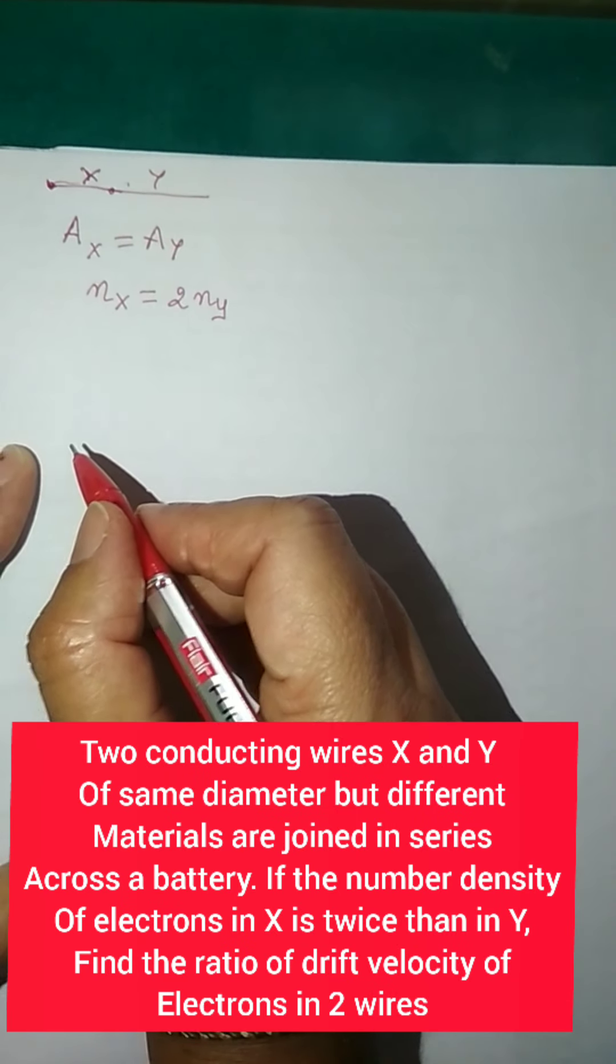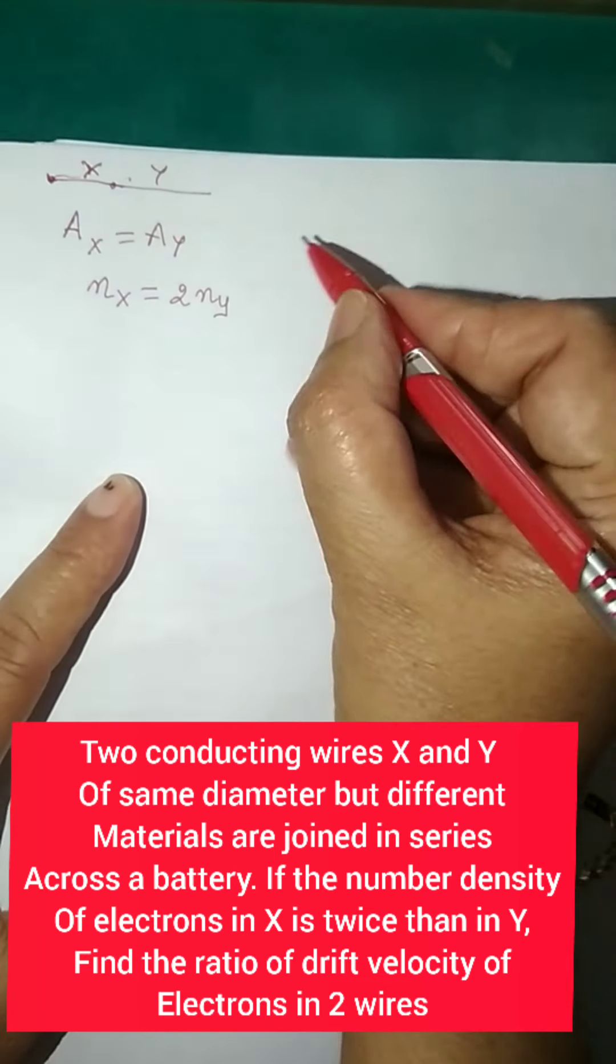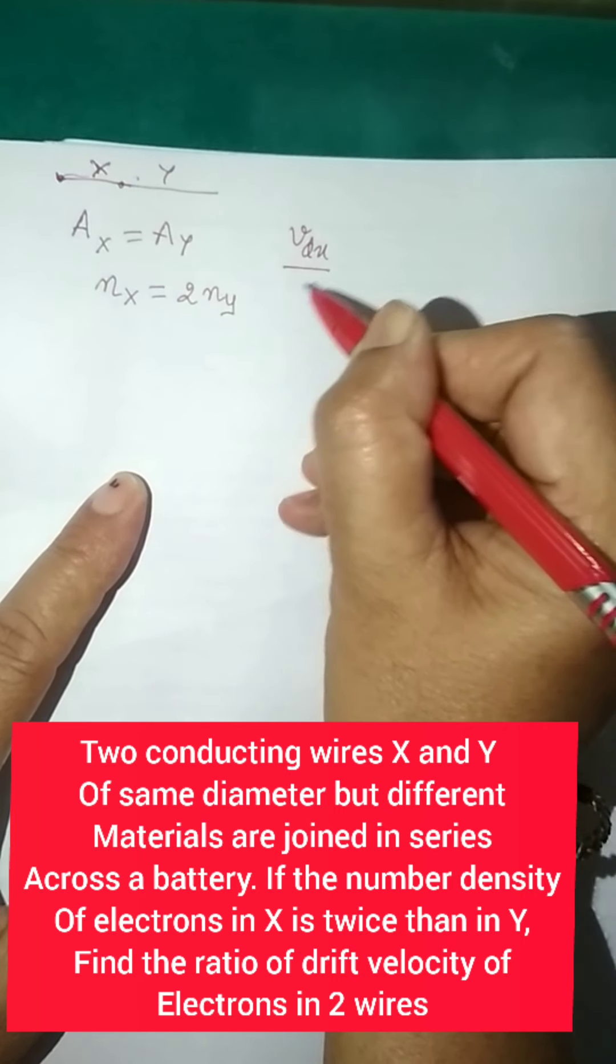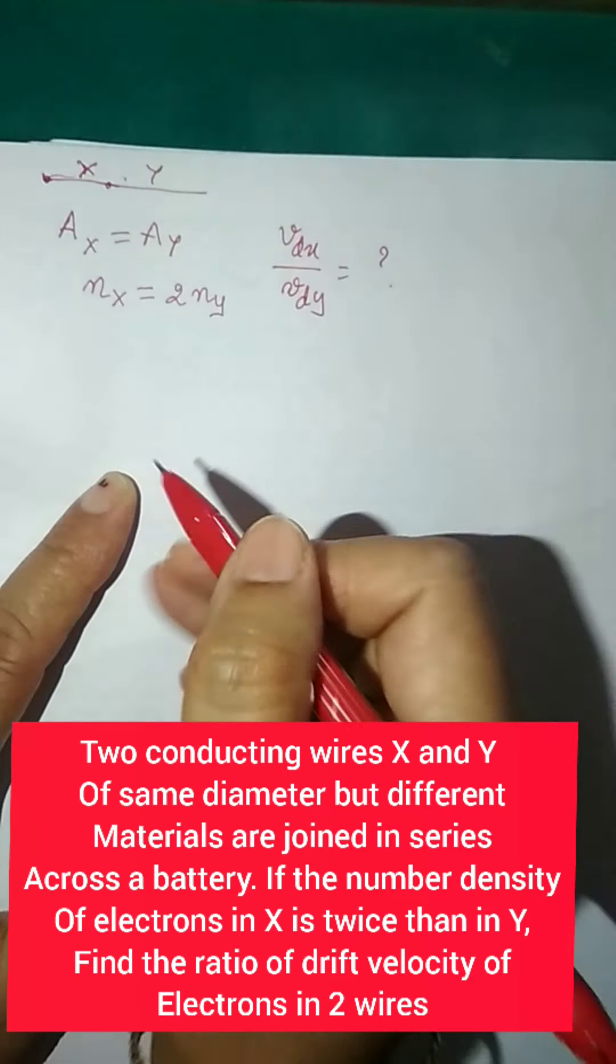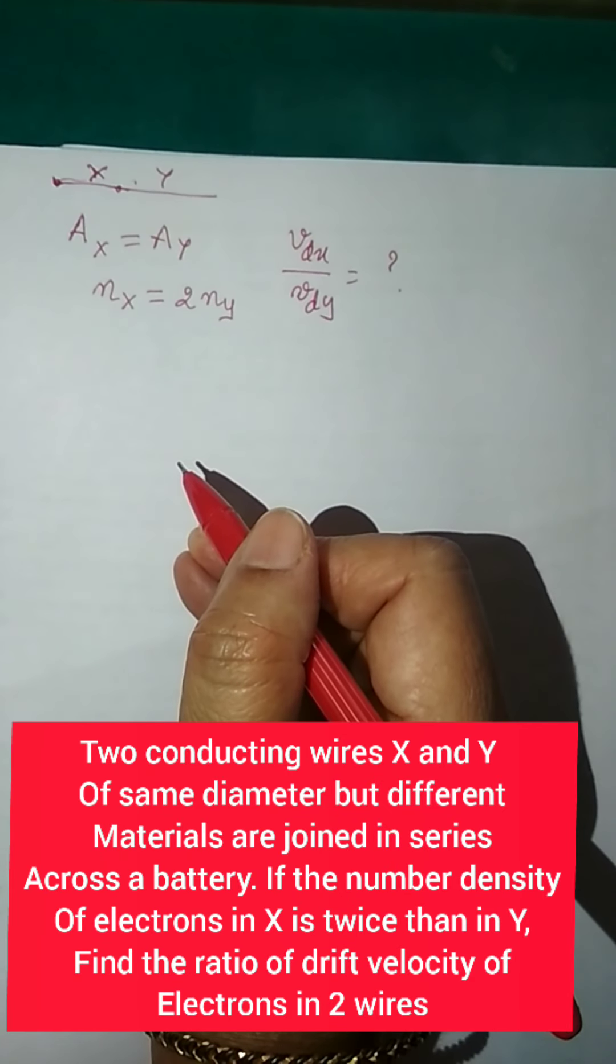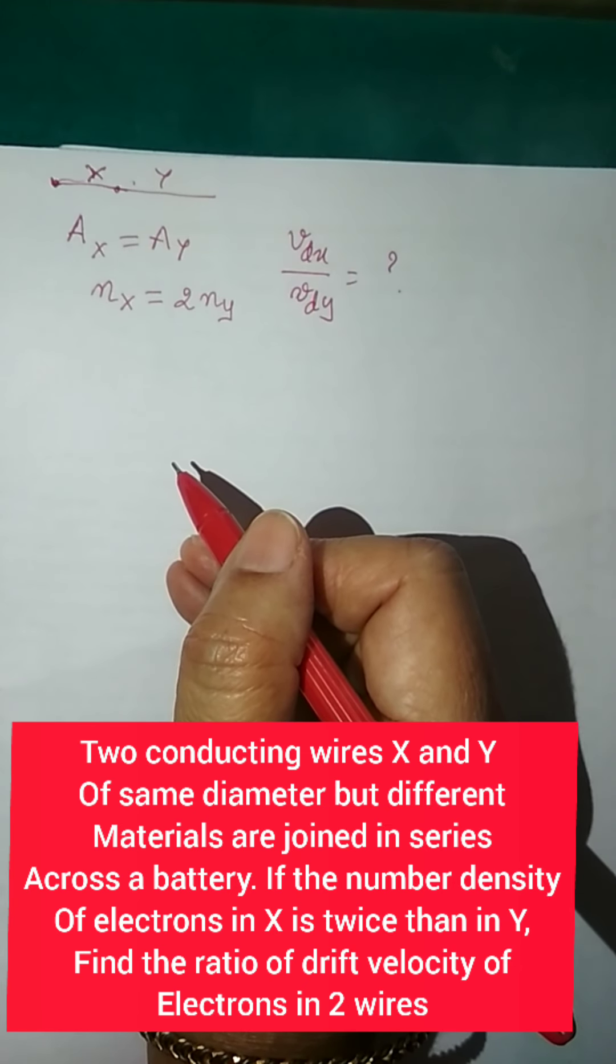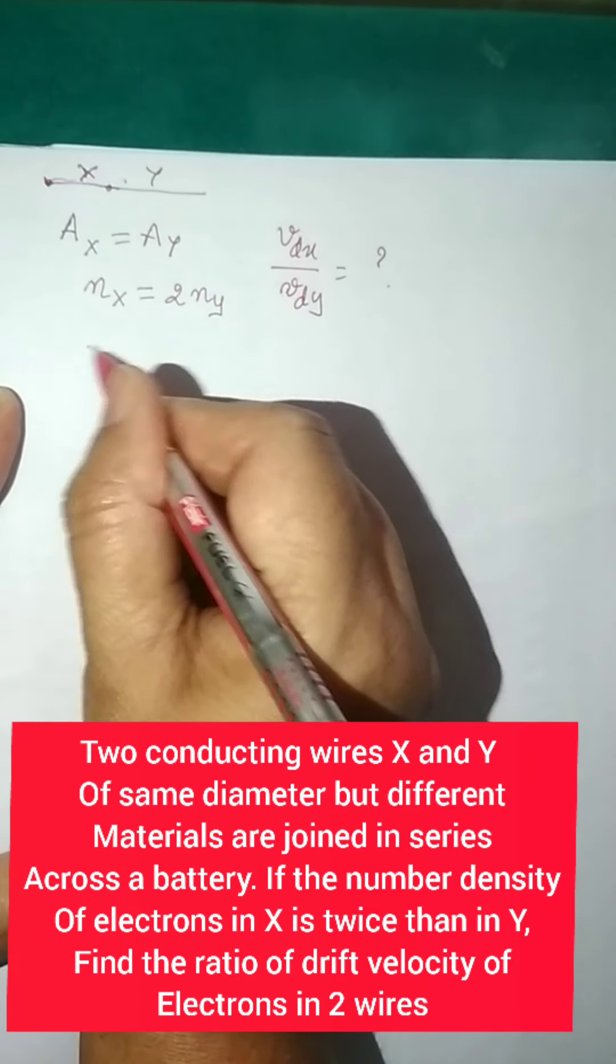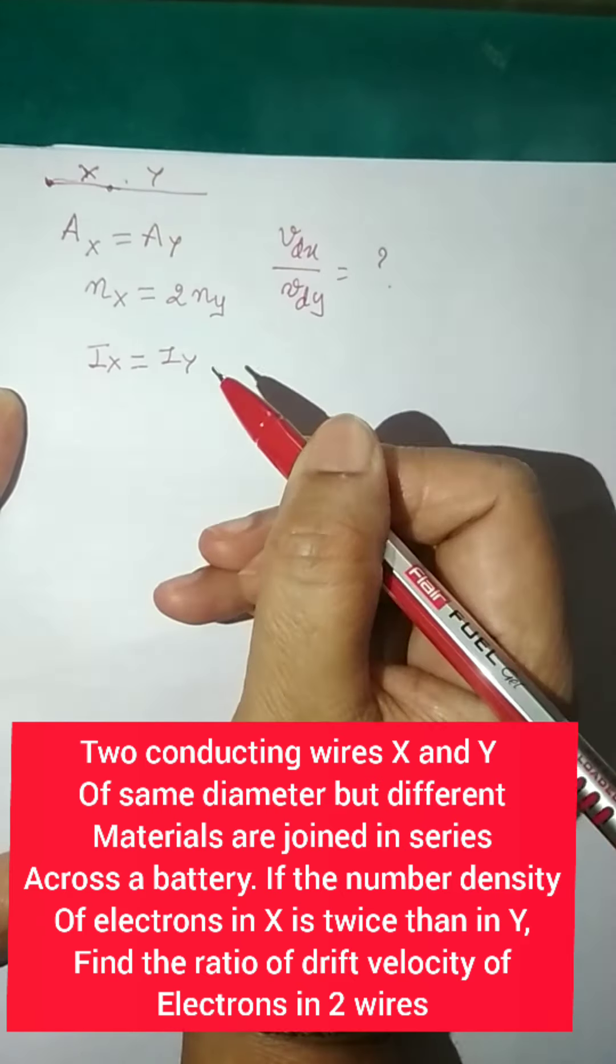Find the ratio of the drift velocities. So we have to find the ratio of the drift velocities, that means we have to find Vdx by Vdy. Now you know that, what will be the relation as the two wires are connected in series? If the two wires are connected in series, that means the current, same current will flow. That means my Ix is equal to Iy.